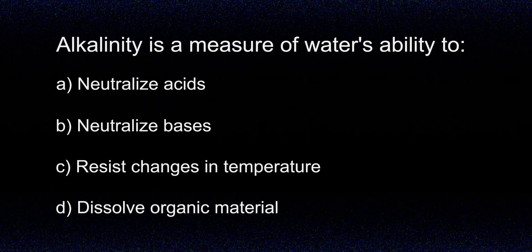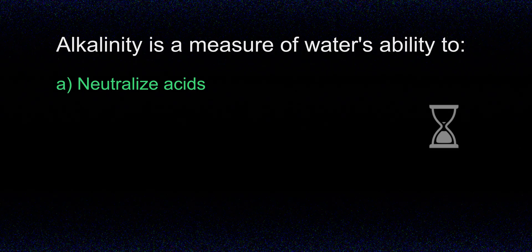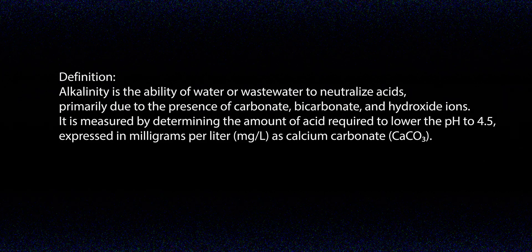Alkalinity is a measure of water's ability to: A. neutralize acids, B. neutralize bases, C. resist changes in temperature, D. dissolve organic material. The answer is A, neutralize acids. Alkalinity is basically water's ability to neutralize acids, which helps keep the pH stable. This buffering capacity comes mostly from carbonate, bicarbonate, and hydroxide ions.